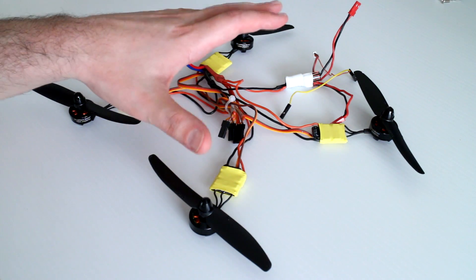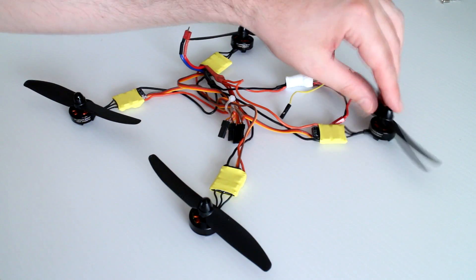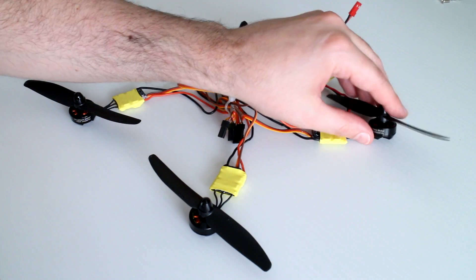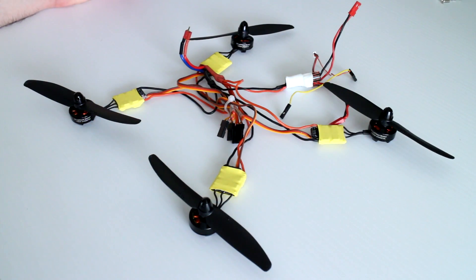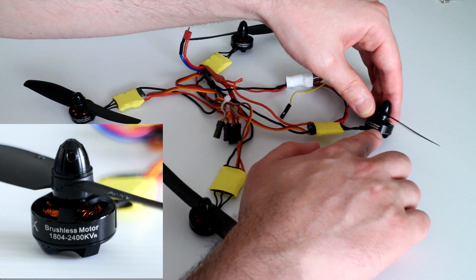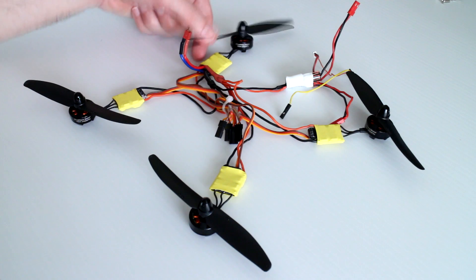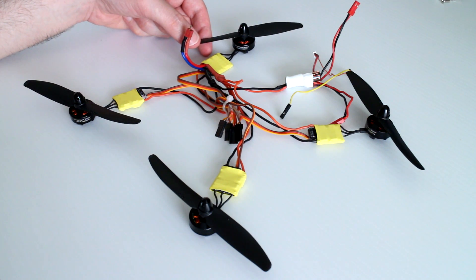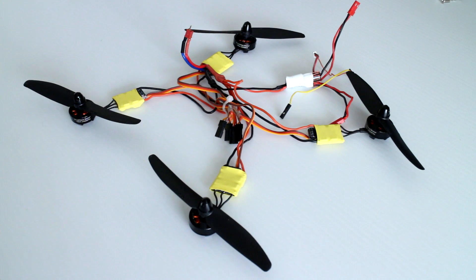There's two of those motors with standard rotation and the other two are the reverse rotation. You know they're reversed because they have the letter R next to the kV rating. The props I'm using are the Gemfan 5x3 props, once again purchased from MyRCMart. They are dirt cheap from that website.